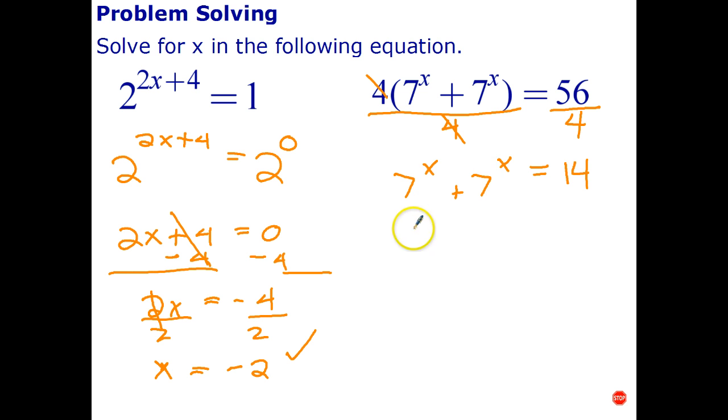Now, these are like terms. So you can add like terms. 7 to the x plus 7 to the x is 2 times 7 to the x equals 14. Divide top and bottom by 2. And that gives me 7 to the x equals 7. And in this case, we know that 7 to the x equals 7. So the answer is x equals 1. Quick check. 7 to the 1 is 7. 7 to the 1 is 7. 7 plus 7 is 14. 14 by 4 is 56. So that's correct.